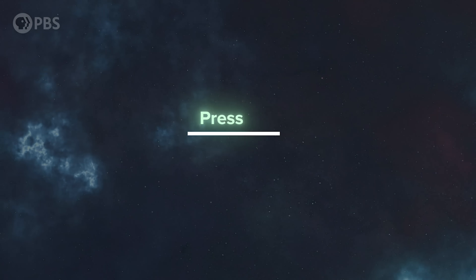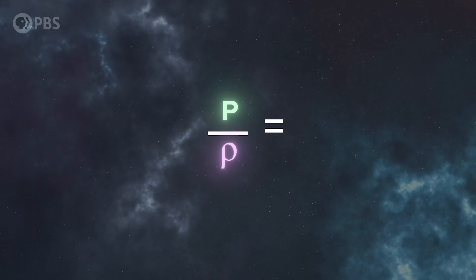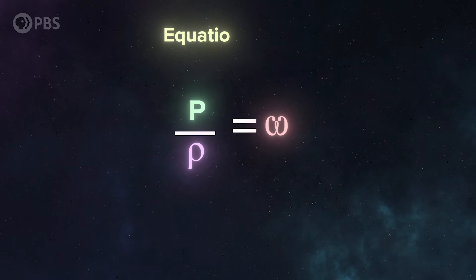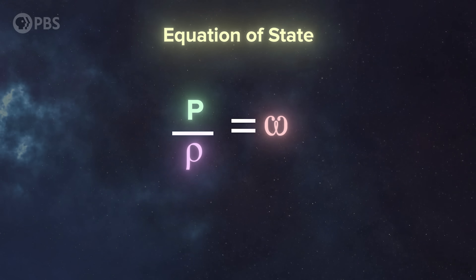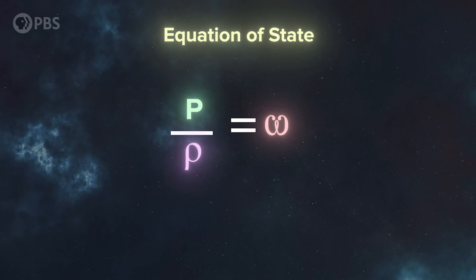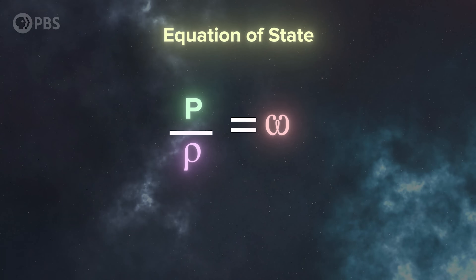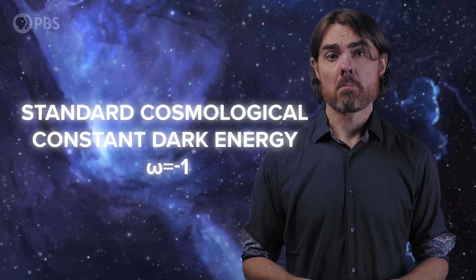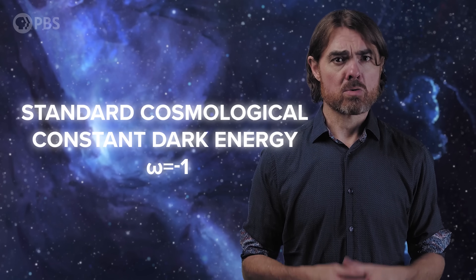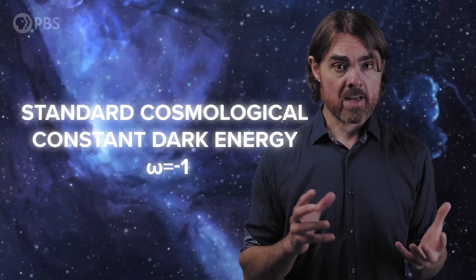We can describe the power of any dark energy candidate by taking the ratio of pressure to density. This gives us the equation of state of dark energy, with the ratio equated to the equation of state parameter omega. The value of omega tells you almost everything about what dark energy will do to the universe. For dark energy, omega is negative due to the negative pressure on top of the fraction and the positive energy density on the bottom. Standard cosmological constant dark energy has omega equals negative 1, which is just what you get when you say that the vacuum has a constant energy density.